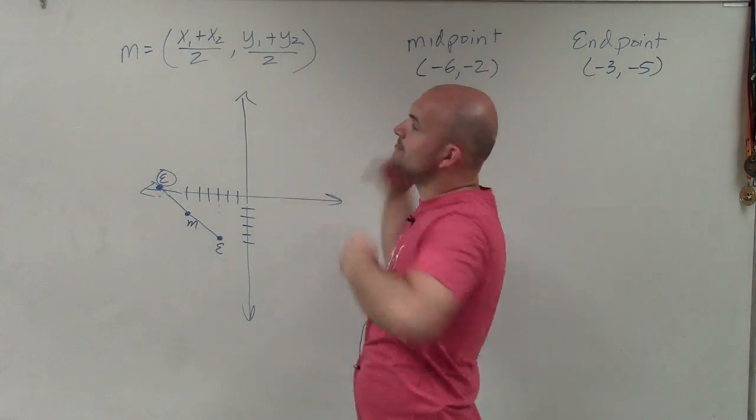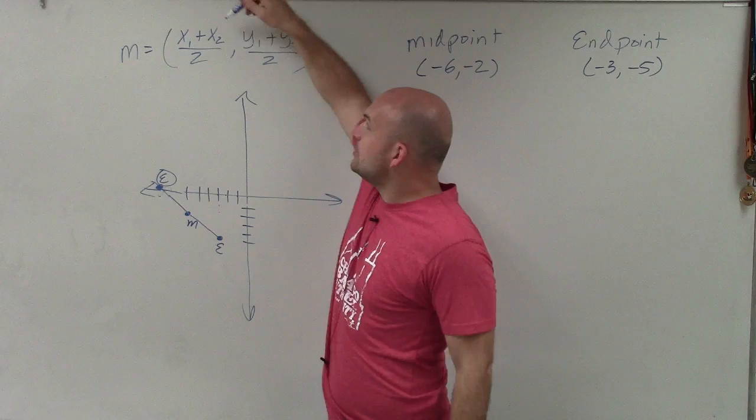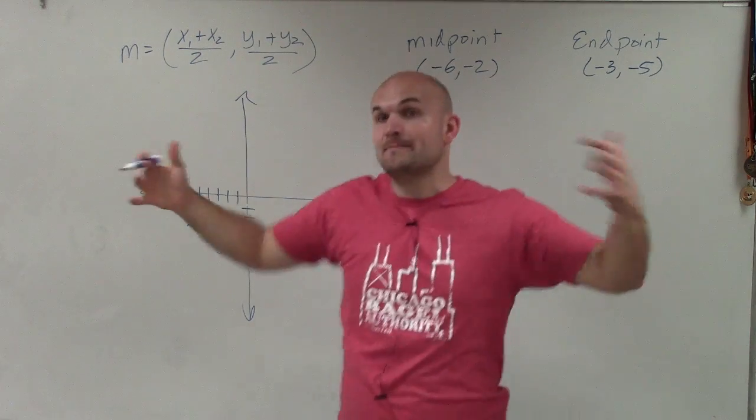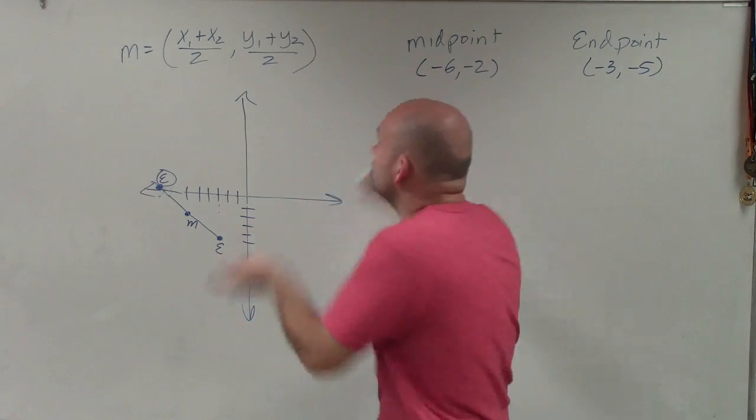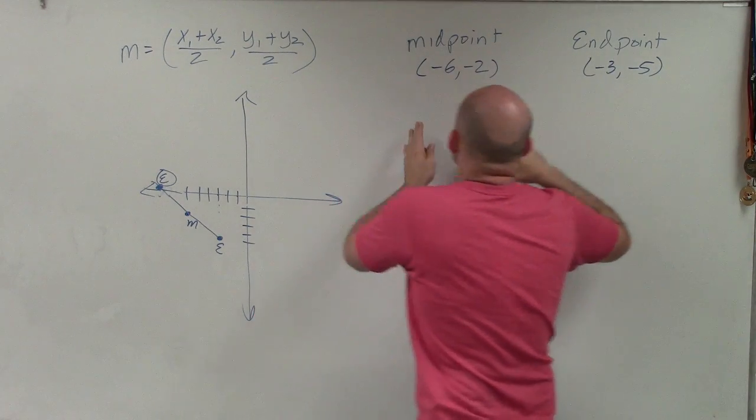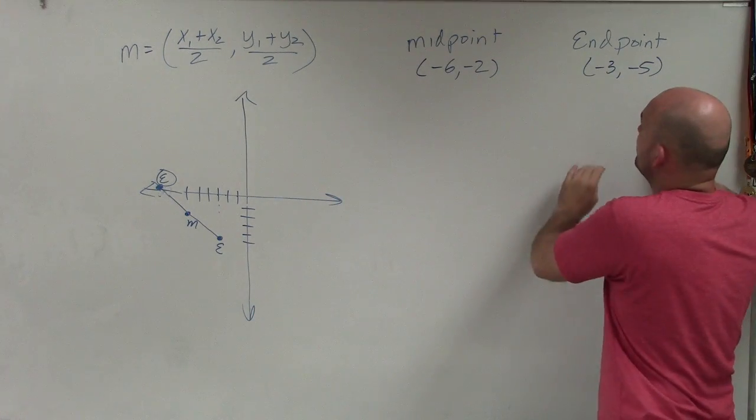Now, when we look at our midpoint formula, x1, x2, y1, y2, those represent the x and y values of our endpoints. But we only know one of them. So one thing that I can do is take that formula and say, all right, well, I'm going to plug in one point.